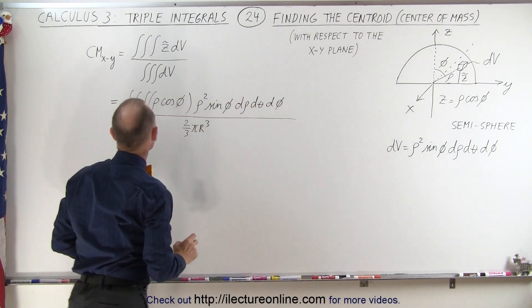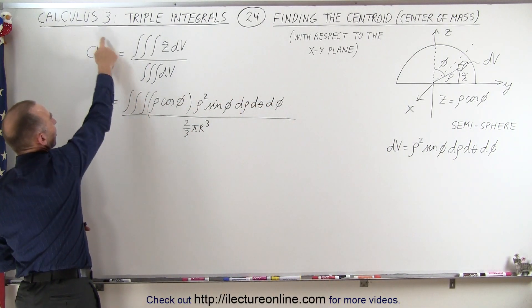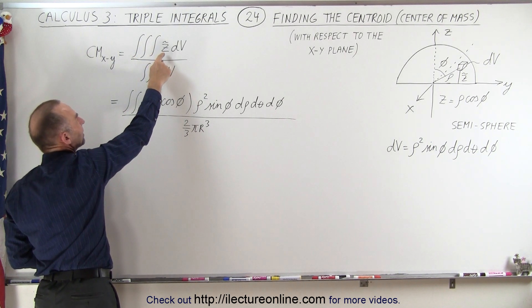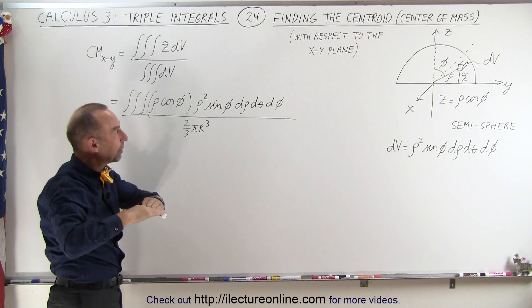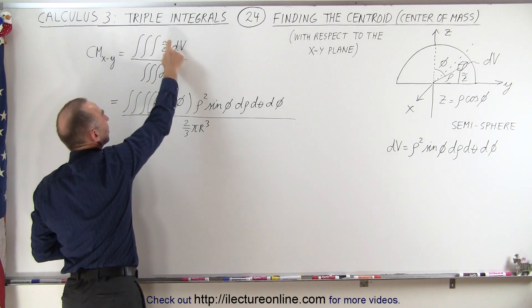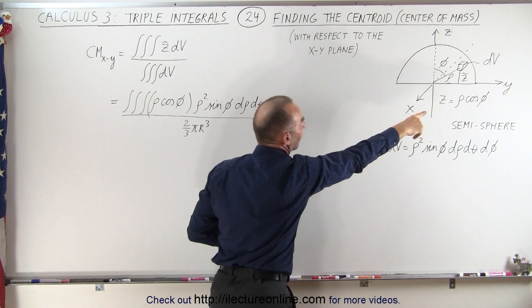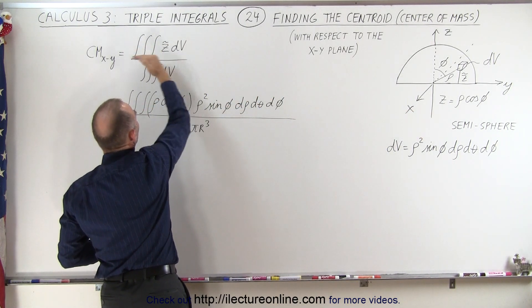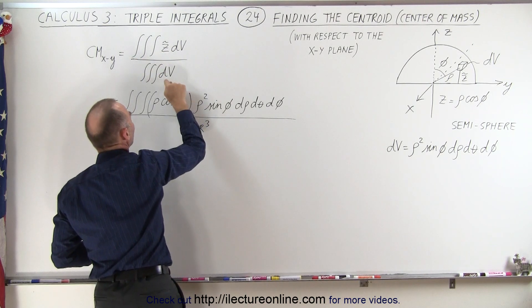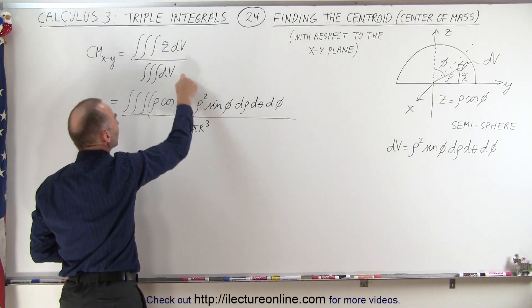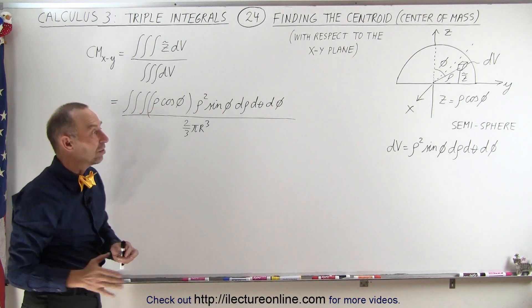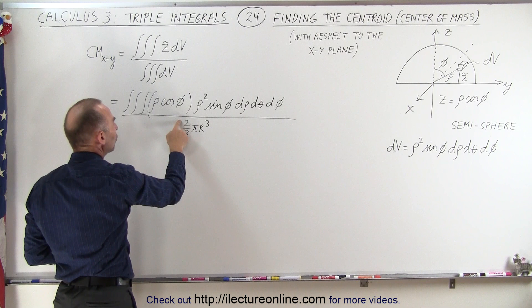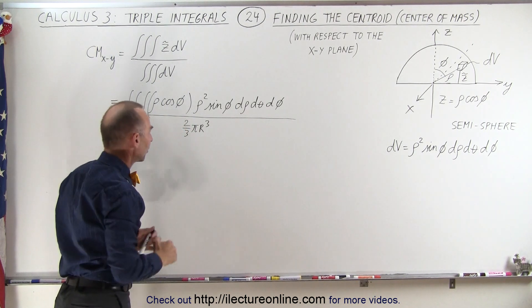The definition of the center of mass, or the centroid of an object, is equal to the triple integral of the distance from the reference plane to the volume element — that's z̃, which is rho cosine phi — times the volume element, divided by the triple integral of dV, which is basically the volume. Since it's a semi-sphere, the volume is simply two-thirds pi r cubed, which is half of four-thirds pi r cubed.